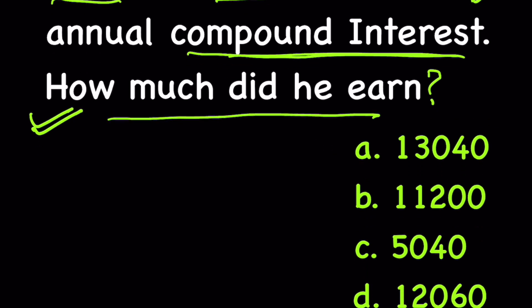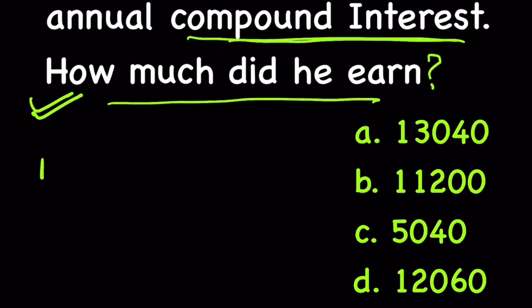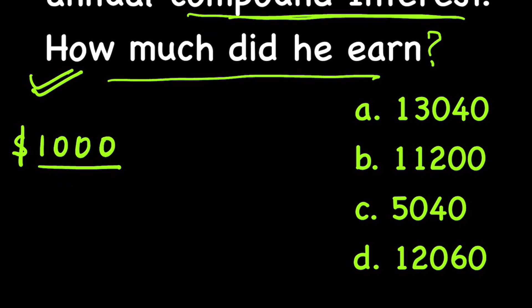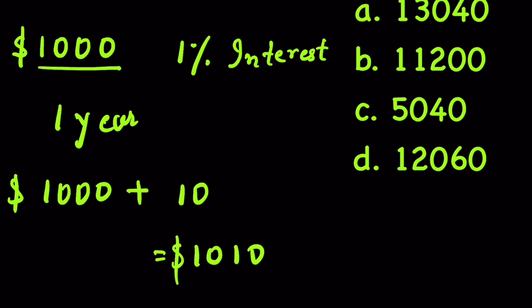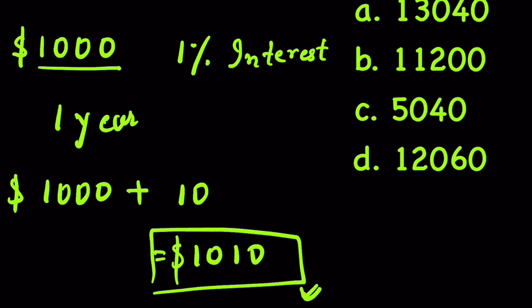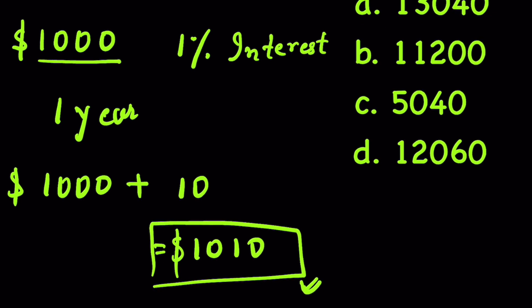We will try to understand here. Consider that you have $1,000 in your bank and the bank pays you 1% interest on it — this is called simple interest. That means at the end of one year, you will get your principal amount plus 1% of $1,000, which is $10, so it is $1,010. This is your total amount at the end of the first year.